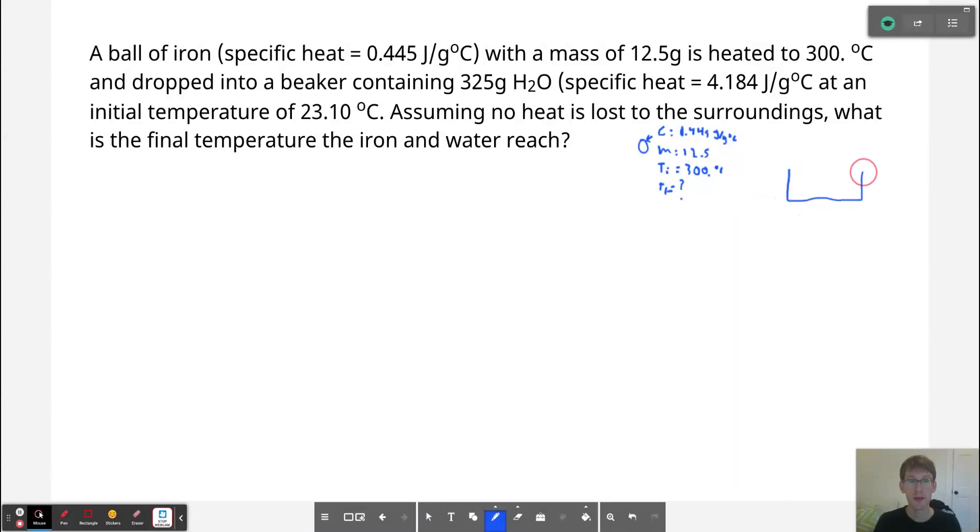So I've got this beaker of water. And the iron will go into it, but initially we have this water with 325 grams as our mass. Our specific heat is equal to 4.184 joules per gram degree Celsius. And by the way, I will be specific in what I'm saying the specific heat of water is. Sometimes I'll say 4.184, sometimes 4.18. Our initial temperature is going to be 23.10 degrees Celsius.